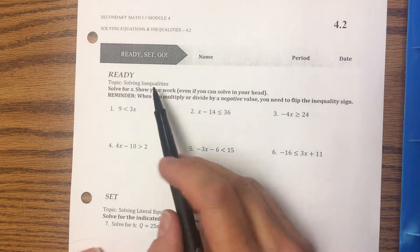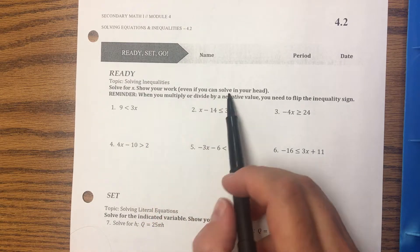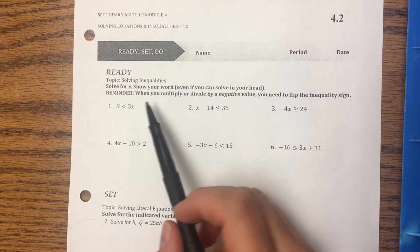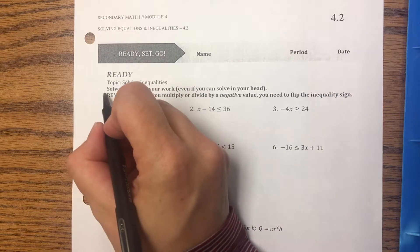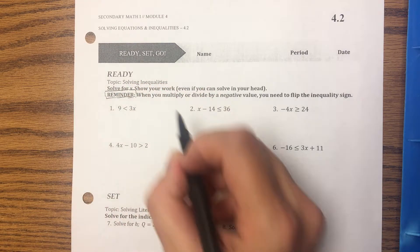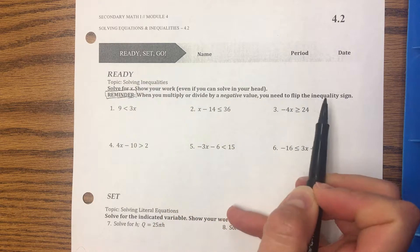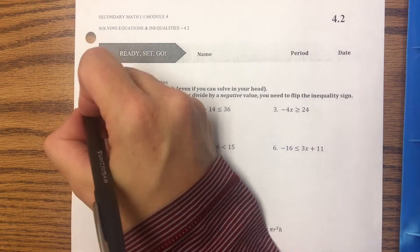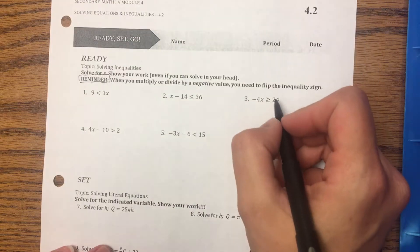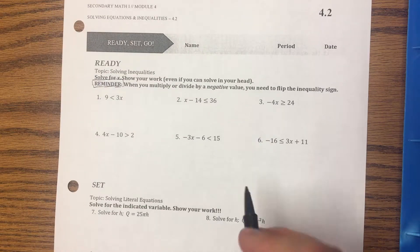So the 4.2 Ready section: solve for X, show your work even if you can solve it in your head. We have this big reminder here of something we learned in middle school. When you multiply or divide by a negative value, you need to flip the inequality sign. So let's do an example where we use that.